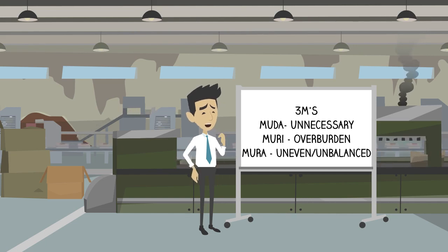Heijunka, which is a Japanese word that means leveling, is a concept that addresses Mura by creating consistency or evenness.